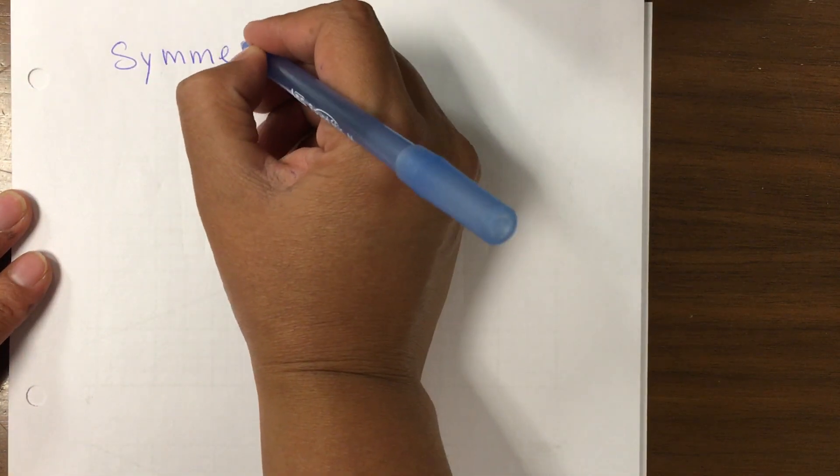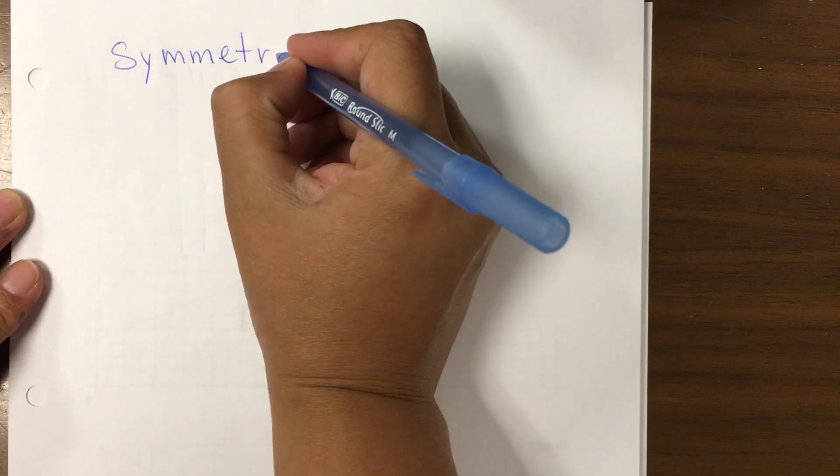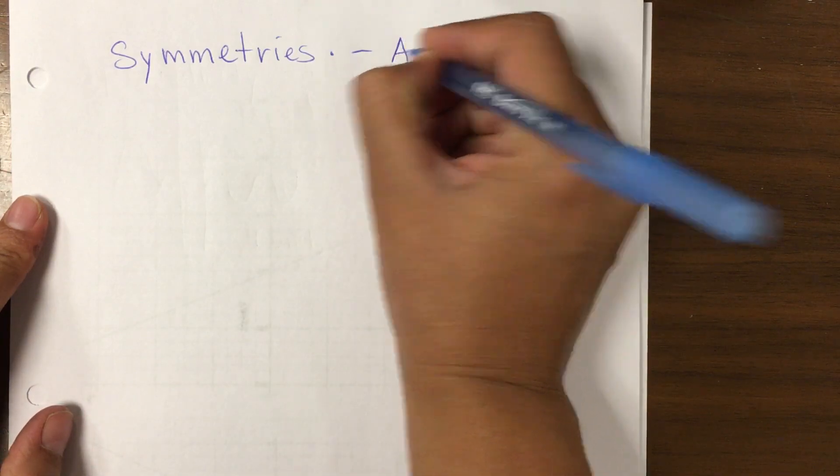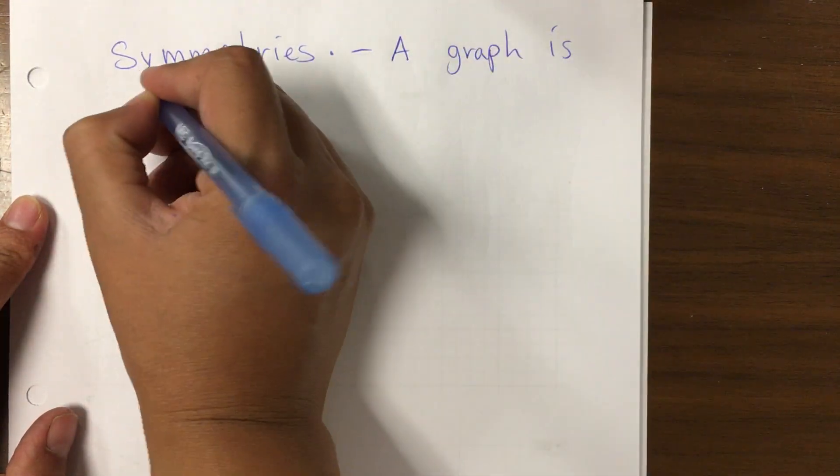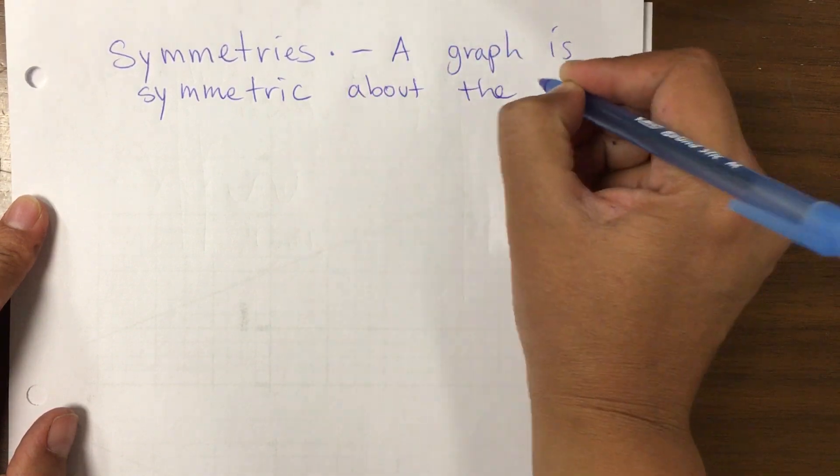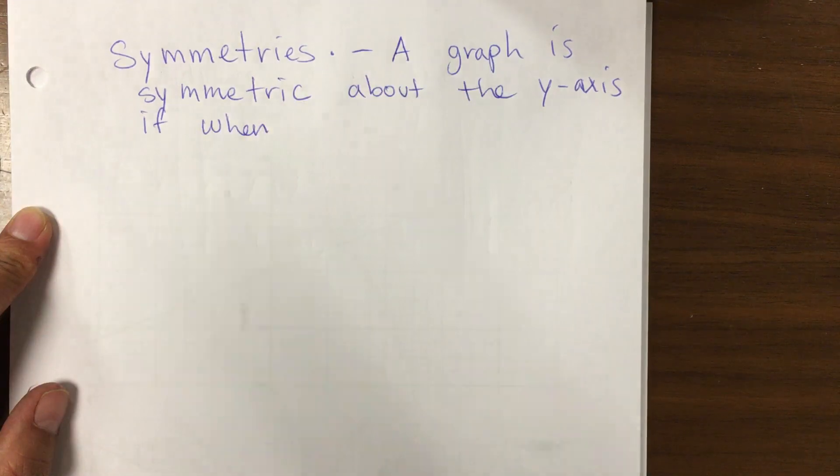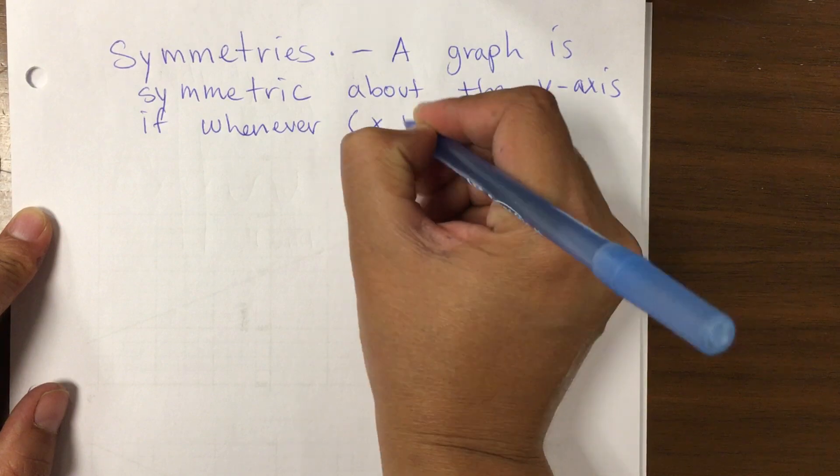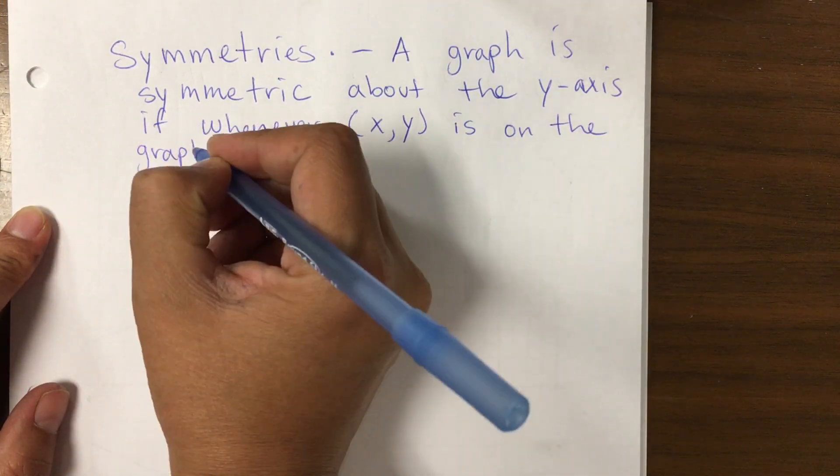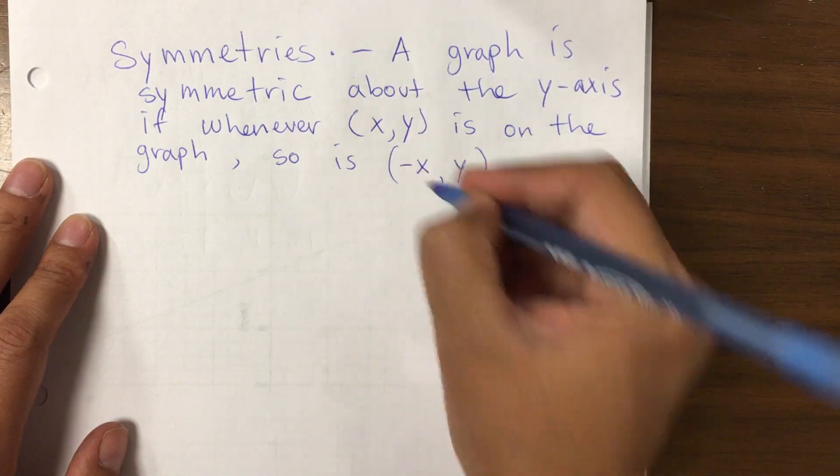The next is to analyze whether a graph is symmetric or not. We can say that a graph is symmetric. Let's write that down. A graph is symmetric about the y-axis.